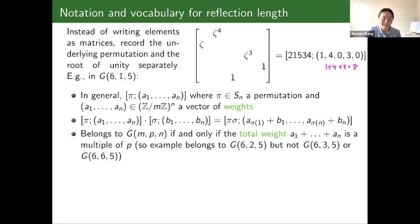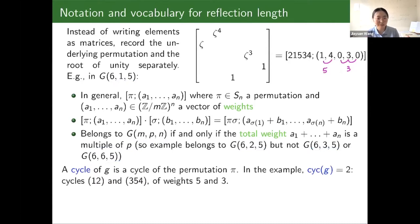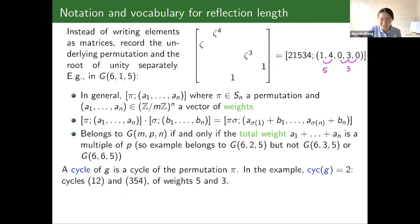An element is in group G(m,p,n) if and only if the total weight is a multiple of p. So this element is in G(6,1,5) and also G(6,2,5) but not the others. We also have the notion of a cycle of an element — that's just a cycle of the permutation. In this example we have two cycles: 1, 2 and 3, 5, 4 in cycle notation. The weight of the first cycle is 5 and the weight of the second cycle is 3.